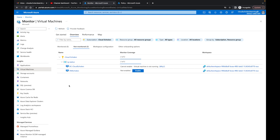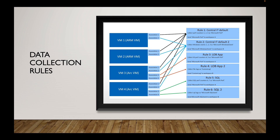Let's talk a little bit about data collection rules and how they work. With data collection rules, you can have all your different virtual machines — VM1, VM2, VM3, and VM4 — and associate them with different rules. For example, Rule One says 'collect performance counters' and 'send Microsoft Perf to Workspace A.' That means Workspace A is getting information from all four virtual machines.